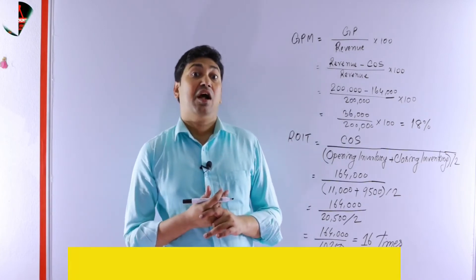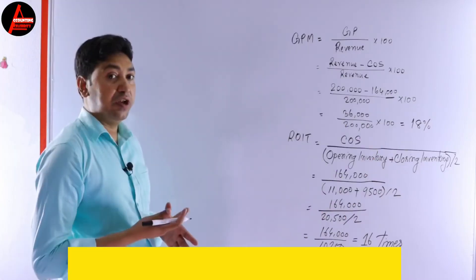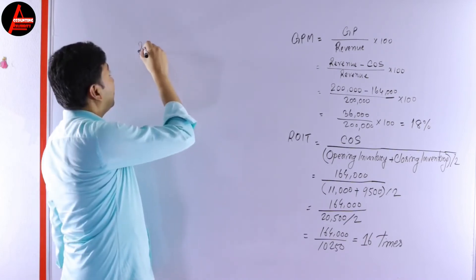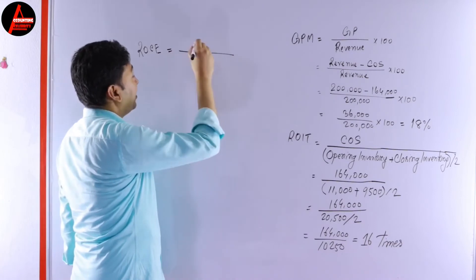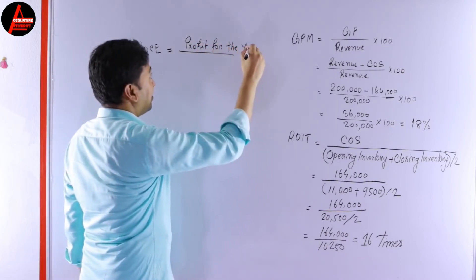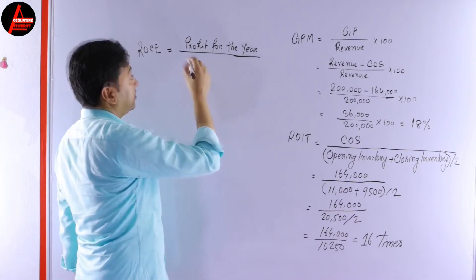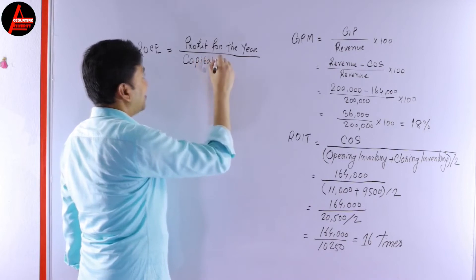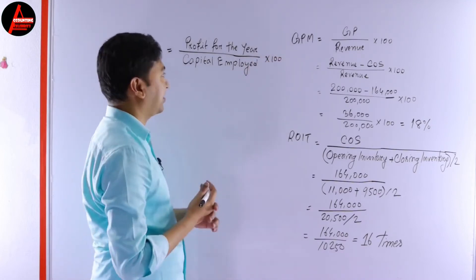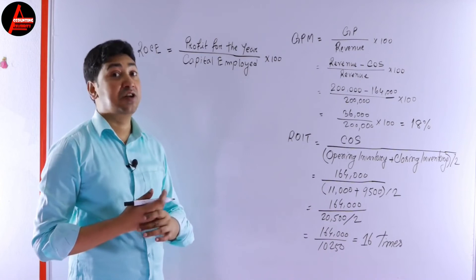Now the last one: return on capital employed, ROCE. The formula is: ROCE equals profit for the year — which you can also call net profit — divided by capital employed, times 100. We do not have profit for the year in this question, and capital employed is also not directly given.